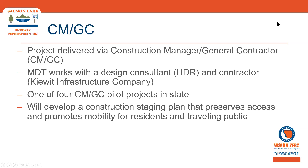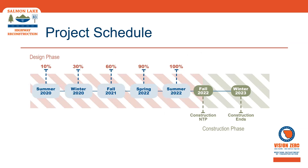We're going to take a quick look at the project schedule. At this point in time, we are early in the design phase and working towards a plan set that is about 30% complete by the end of this year. We'll continue working on plan development over about the next year and a half, with the intent to have final plans ready for construction in the fall of 2022. The bulk of the work is planned for the 2023 construction season, with some possible overflow into 2024.